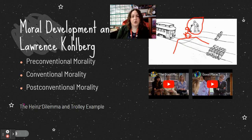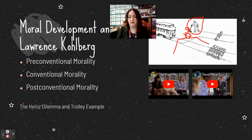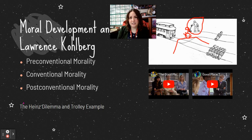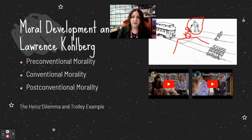The Heinz dilemma: your spouse is dying of a rare form of cancer and there's a drug that will save her. The druggist in town has the drug — it costs him $500 to make but he sells it for $5,000. You don't have $5,000, and he won't sell it to you even with payment plans. So do you steal the drug to save your spouse? Pre-conventional says no — you don't want to get in trouble for stealing. Conventional says no — because stealing is illegal. Post-conventional says: while people have the right to property and to life, the right to life is greater than the right to property, so you should steal the drug.